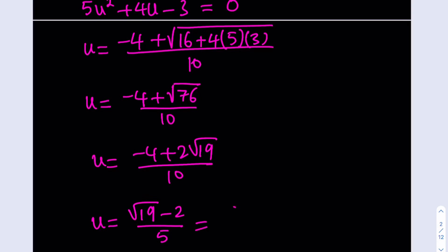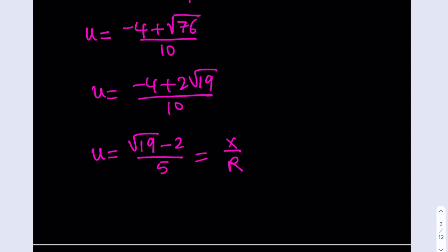Now this equals x over r, and remember we are trying to find x in terms of r, so if you multiply both sides by r we get the answer. So x is square root of 19 minus 2 over 5 multiply by r.